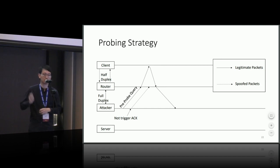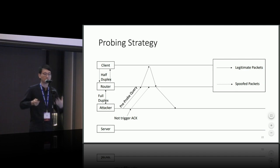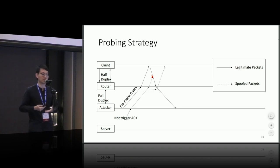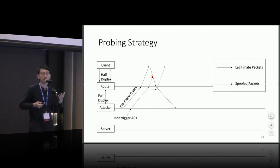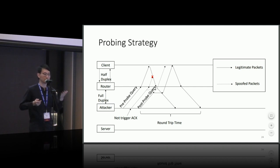Consider the following scenario in wireless: the client has established two connections — one to the target server and one to the off-path attacker. The attacker can send both legitimate and spoofed packets to the client. Because wireless is half-duplex, when both uplink and downlink traffic transmit at the same time, it's likely to cause interference, forcing either or both ends to back-off and retransmit. If the client gets the chance to transmit, the spoofed packet has to wait — so the round-trip time of the probe query is prolonged.